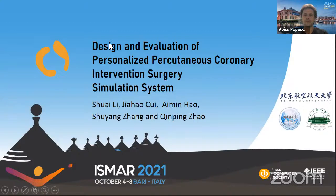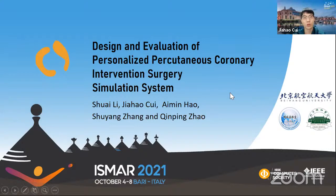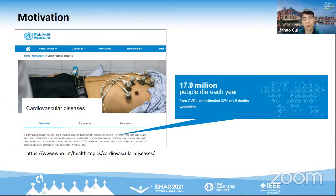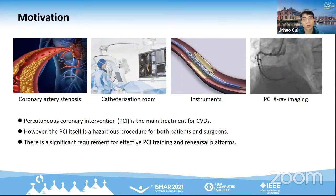Thank you for the introduction. This is a joint work between Beihang University and Peking Union Medical College Hospital. According to statistics, cardiovascular disease remains the leading cause of mortality worldwide. PCI is the main treatment for CVDs. The main operation procedure of PCI is to cannulate the heart under X-ray imaging. Due to the complex structure of the heart and vessels, cardiologists need to carefully manipulate instruments. Unconfident or incorrect operations result in more radiation dosage, more angiography times, and intraoperative complications, which are hazardous for both patients and cardiologists.